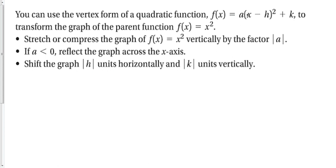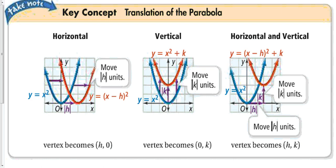We can use vertex form to transform the parent function f(x) = x². We stretch or compress the graph by the absolute value of a; if a < 0 it reflects across the x-axis. We shift the graph h units horizontally and k units vertically. A positive h shifts the graph to the right, a negative h to the left; a positive k shifts up, a negative k shifts down, and the vertex changes accordingly.